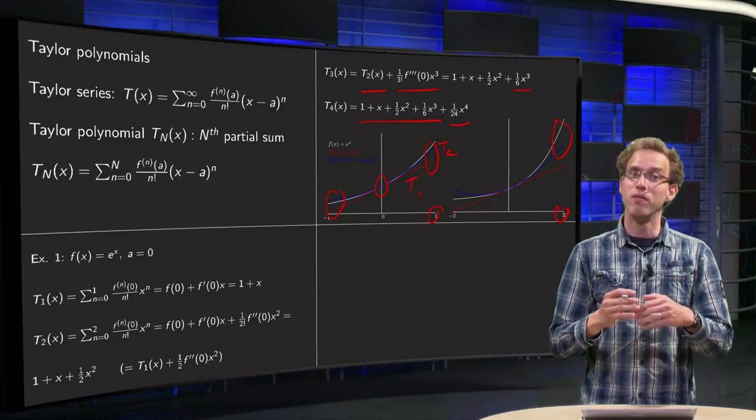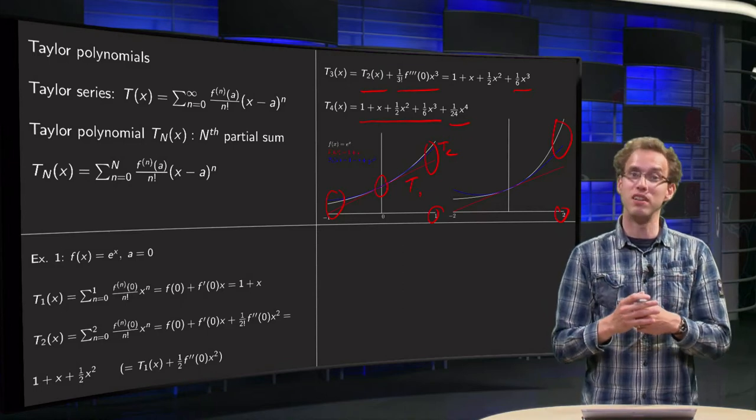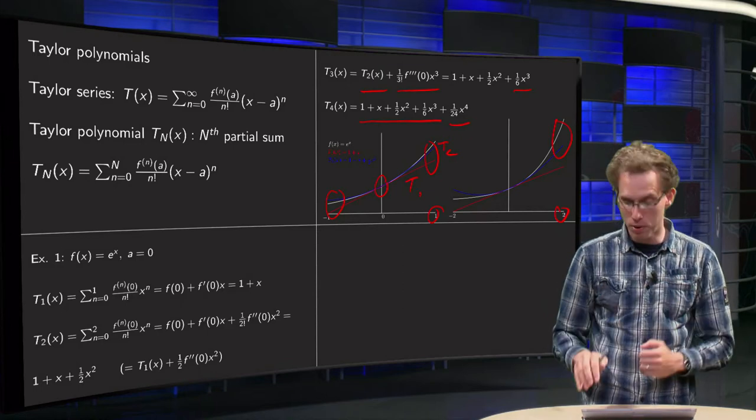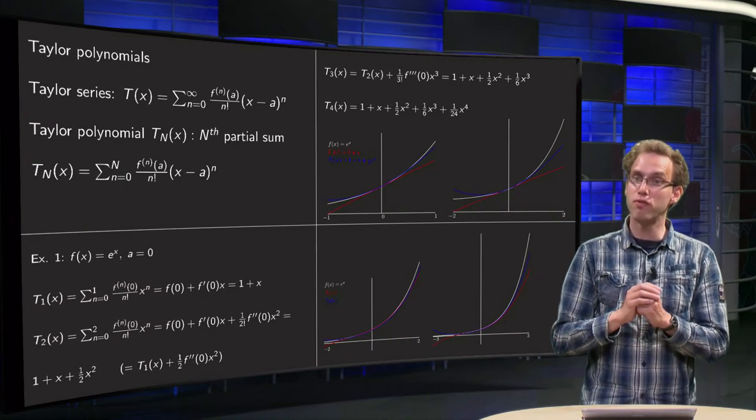Well, to solve this problem of course, we just take more terms, so instead of taking the T2 of x, we are going to approximate f by the T3 and the T4 of x.